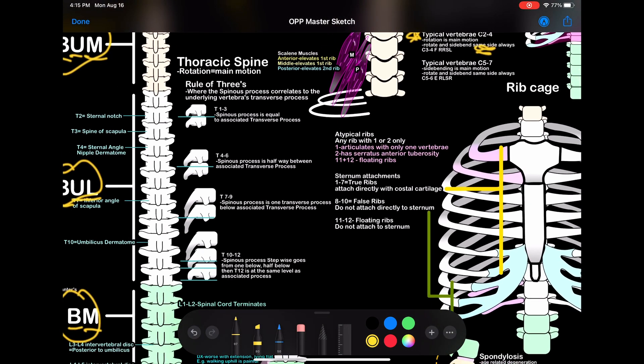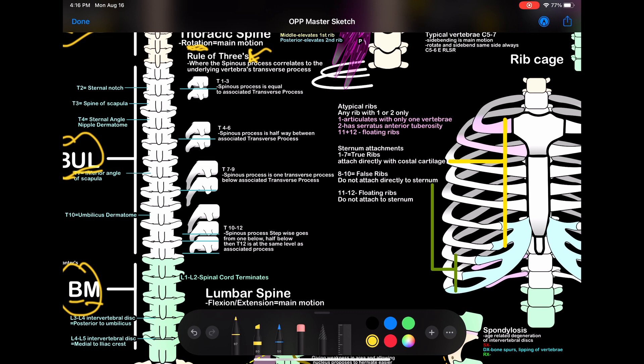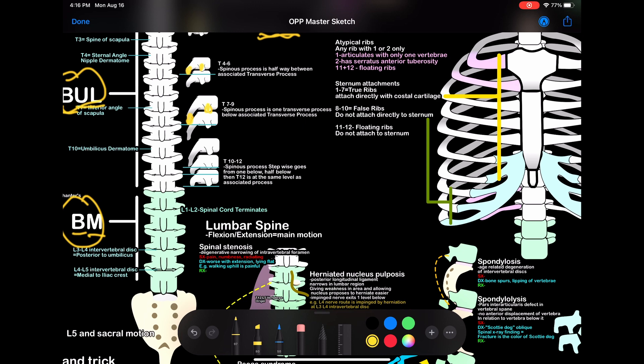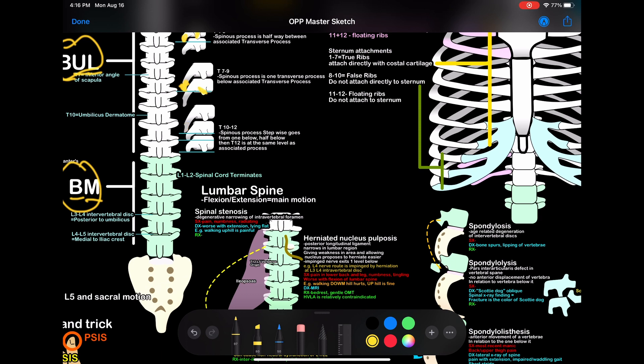Let's go to the thoracic spine. Main motion: rotation. Rule of threes — this all has to do with the spinous processes. T1 through 3, the spinous processes are small, associated with the transverse process of that vertebra — same level. T4 through 6, the spinous process is a little lower, so it's halfway. T7 through 9, the spinous process is longer and about equal with the transverse process of the one below it. T10 through 12 involve all three of those — long, medium, short.